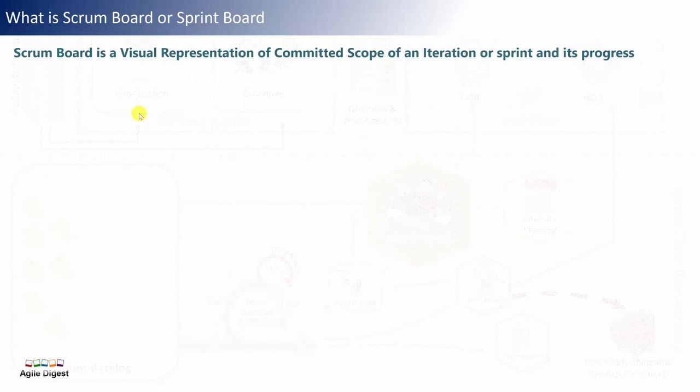The Scrum Board is a visual representation of the committed scope of an iteration or sprint and its progress. When you do sprint planning, you commit a number of stories for one iteration — a particular time box — and you track how you are progressing within that sprint. To give a visual representation of your progress, you need a board where you have all the stories and tasks moving from one state to another. The scope of your commitment is for the time box, while the structure of the Scrum Board remains for the project.